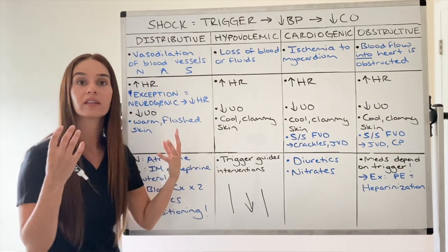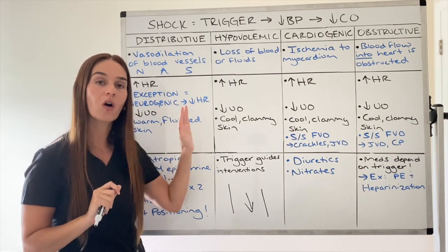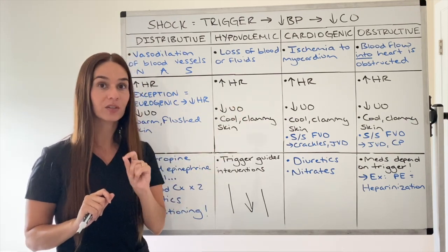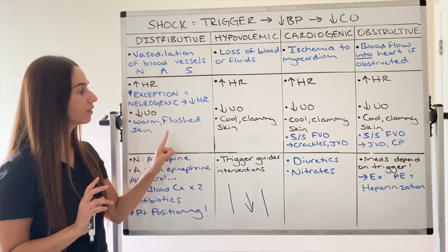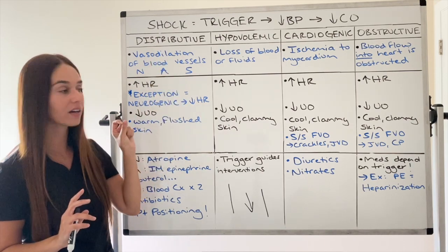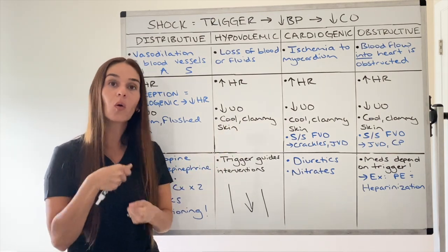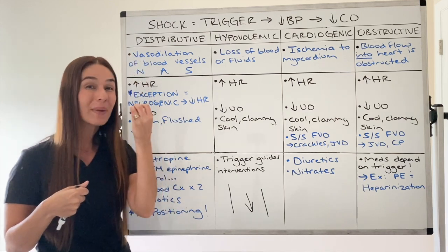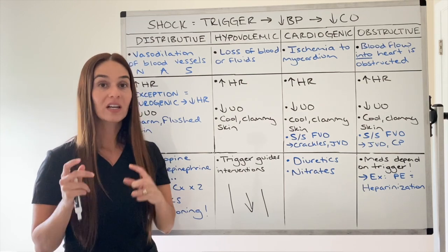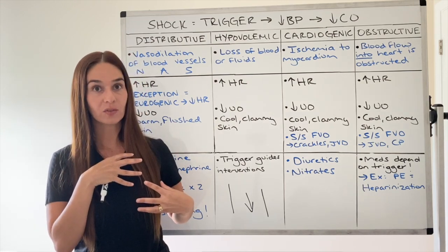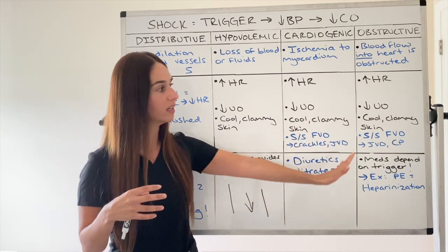Quick review: heart rate is traditionally tachycardic for all forms of shock except neurogenic. Skin is traditionally cool and clammy for all forms of shock except distributive — that means neurogenic, anaphylactic, and septic. Urinary output is decreased for all forms of shock. And you can see symptoms we classically associate with fluid volume overload — such as JVD, crackles on auscultation, chest pain — in two categories: cardiogenic and obstructive shock.